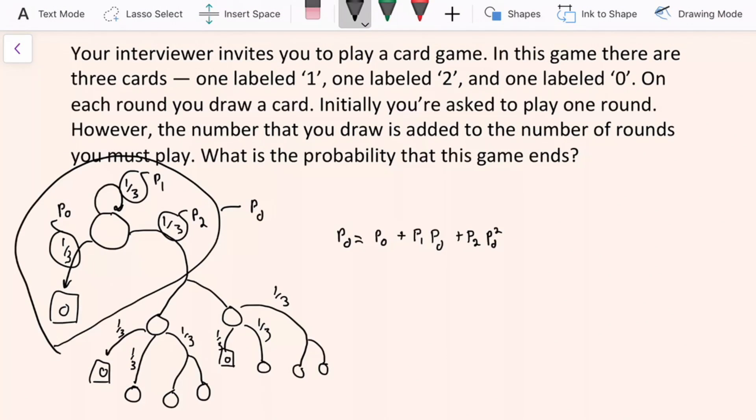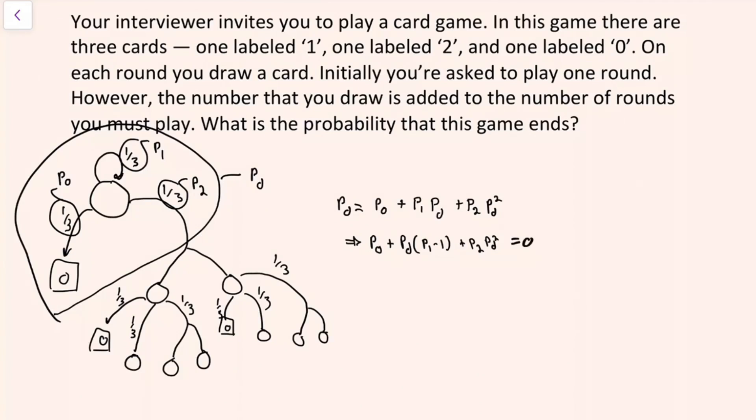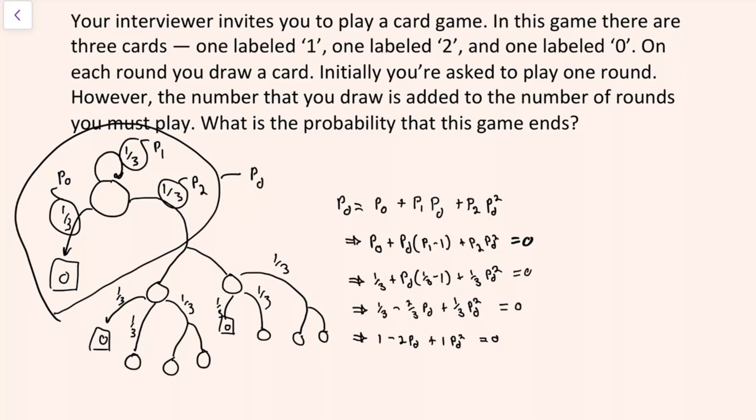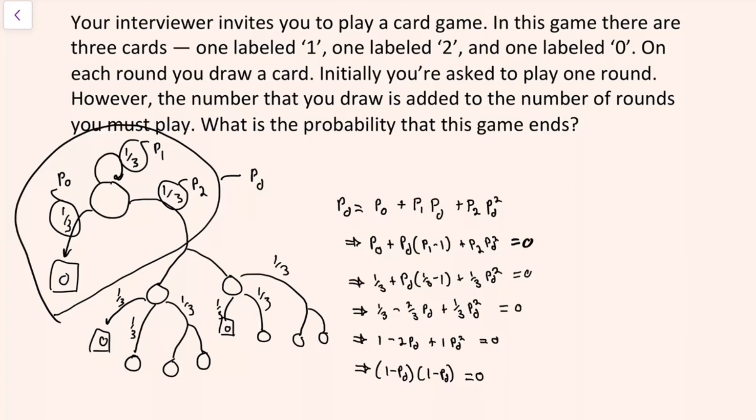And now this could be rearranged into a quadratic equation. And then plug in the values from the problem, and simplify a little bit. And then we can factor the quadratic. And here we can see that the only solution for this quadratic is that the probability of the game eventually being done is 1.